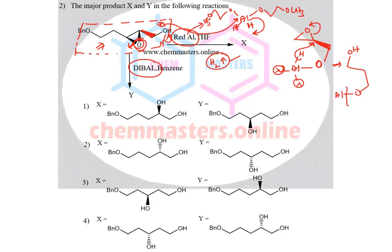After the workup, you can get the hydroxy group here. Just check: one, two, three — two hydroxy groups must be at 1,3 positions. From this side, you are just having another branch of it. Now just try to check. In the reactant, the epoxide is above the plane. That's why, after opening the ring epoxide, the hydroxy group of the epoxide should be with thick line only.